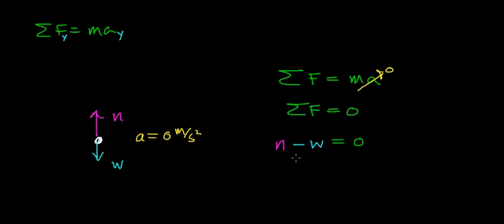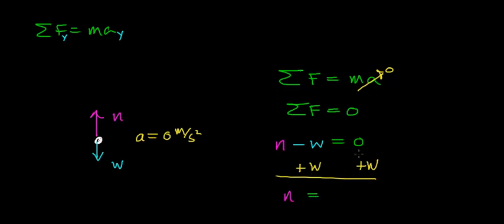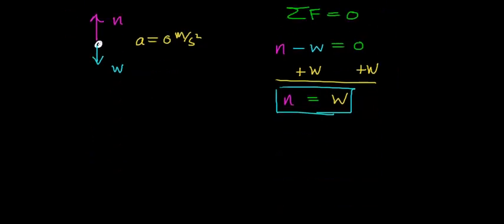When this person is standing motionless on the scale, how much does the ground have to push up on this person? Adding the weight force to both sides of the equation, the normal force equals the weight force. So in this one special case — when this person is not accelerating — the magnitude of the normal force, the force of the ground pushing up on this person, is going to equal the weight force. Now let's take a look at what happens when this person pushes themselves off the ground.